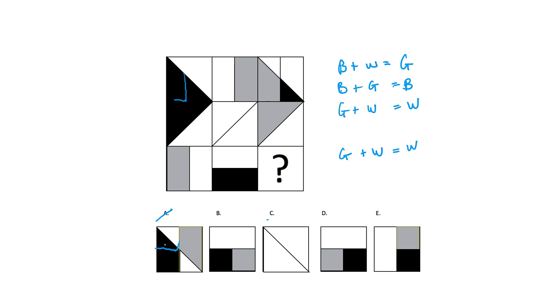Now if we look at the bottom left corner we will add grey with black. Grey with black using our formula should be black. So then we can rule out C and E.